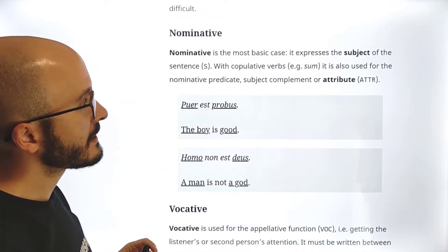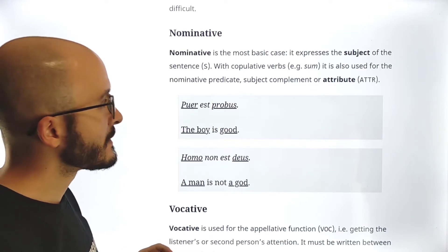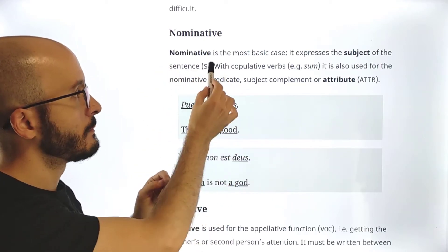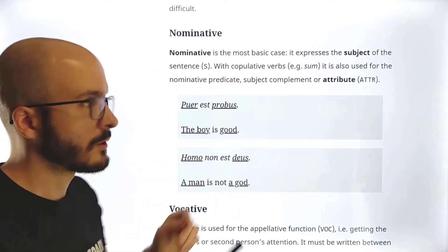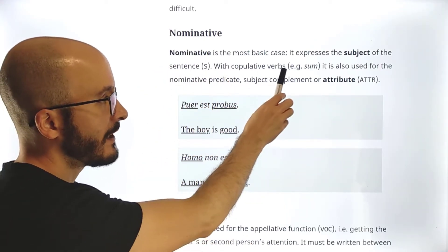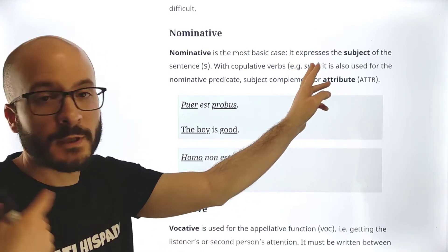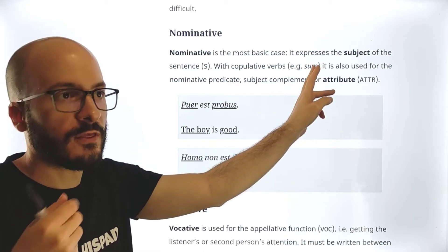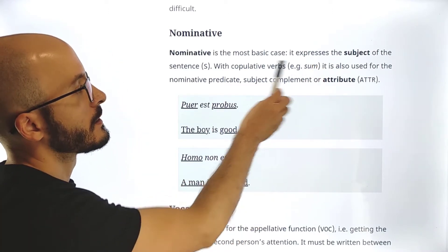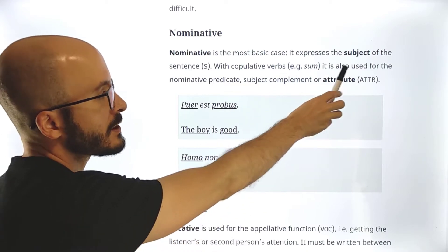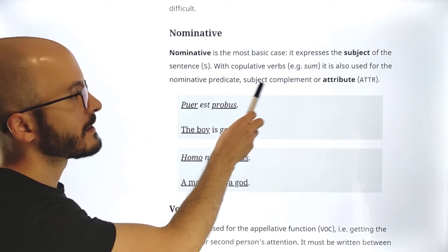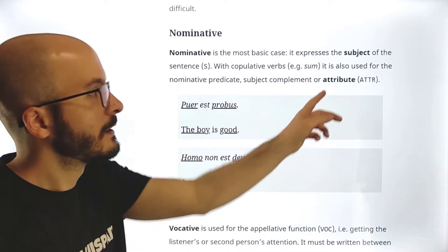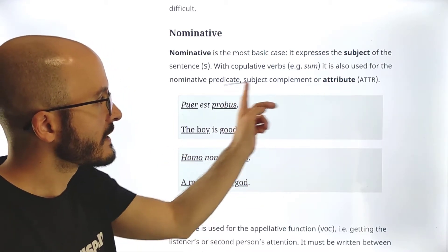Nominative is the most basic case. It expresses the subject of the sentence. We will be writing in the syntactic analysis just as S. With copulative verbs, mostly the verb sum (remember that the verb sum is to be, or there is, there are), it is also used for the nominative predicate, subject complement, or what we called, and what we are going to be calling, attribute.